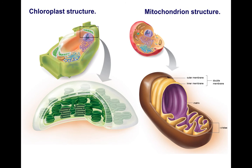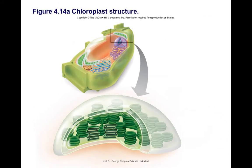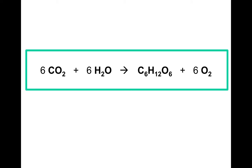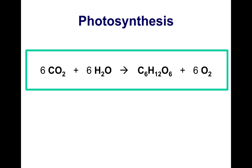We are ready to move on to talk about energy-related organelles — the powerhouses of the cell. We have two types to discuss: chloroplasts and mitochondria. Let's start with chloroplasts, which you will find in plants and algae. This formula represents photosynthesis — probably my favorite formula in biology — and we will be talking about it in more detail later in the course. For now, just being happy with the idea that such a formula exists is totally fine.